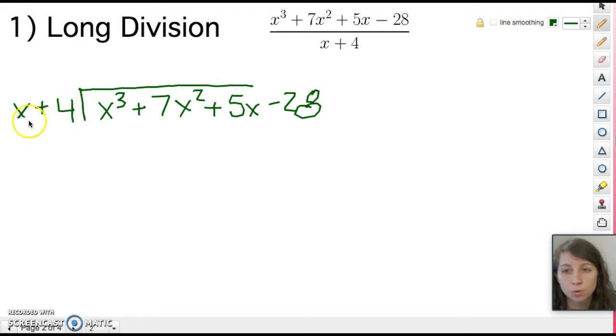All right so x and x³, we want to say how many times does x go into x³, or we can think of what times x gives us x³. That is x² so we'll put our x² up here. Second step in long division is to multiply so we'll do x² times x which is x³ and then x² times 4 so we'll do plus 4x².